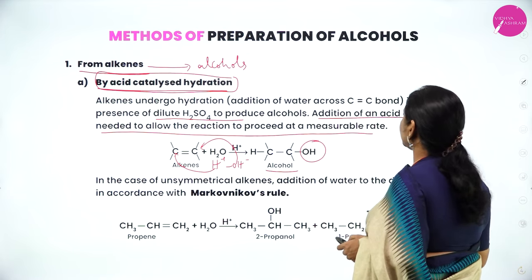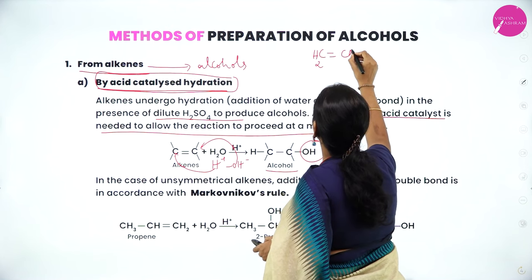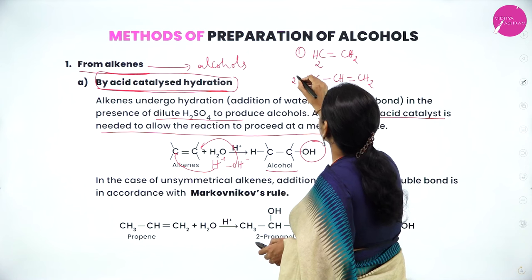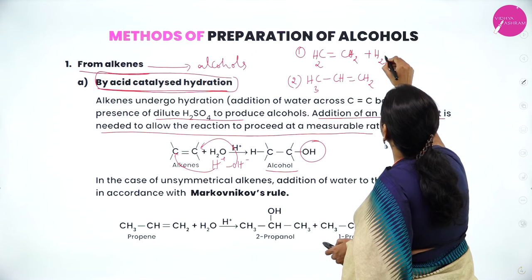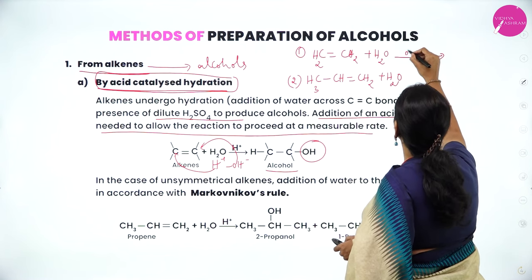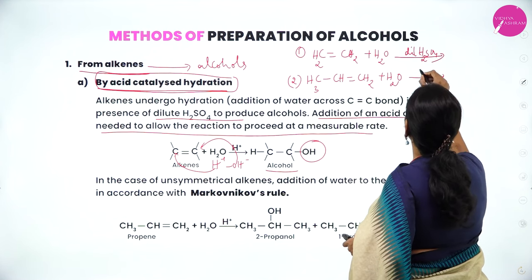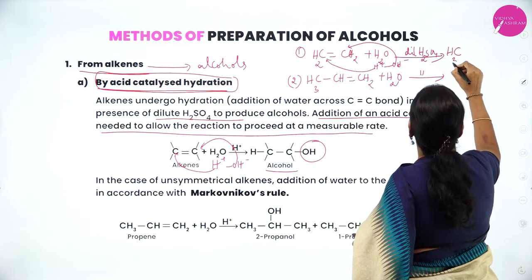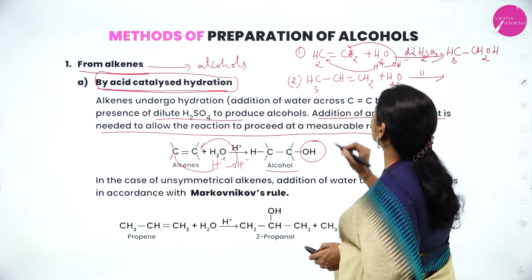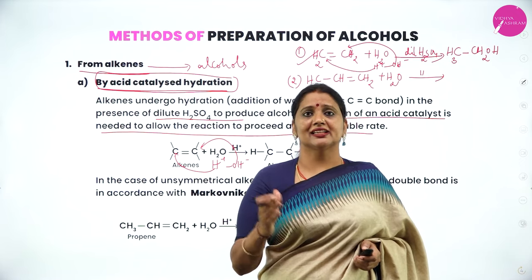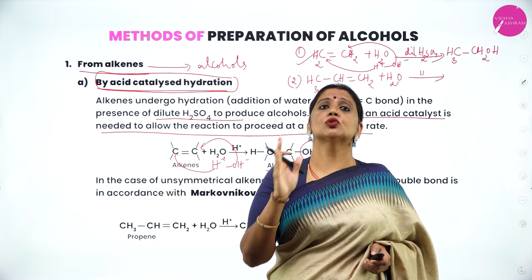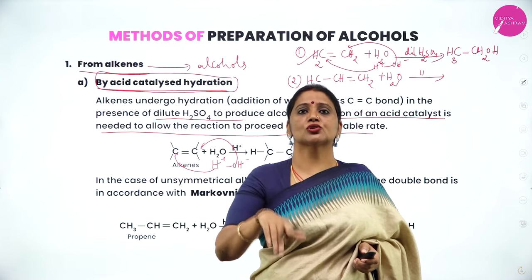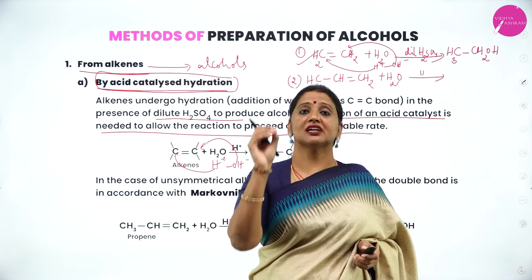Consider two cases. First, ethene; second, propene. To both we add water in the presence of dilute sulfuric acid as catalyst, giving H⁺ and OH⁻. For ethene (CH₂=CH₂), H⁺ goes to first carbon, OH⁻ goes to second carbon, giving CH₃CH₂OH. Ethene is an example of a symmetrical alkene — both double-bonded carbons carry two hydrogens — so no rule is needed. H⁺ and OH⁻ can go to either carbon.